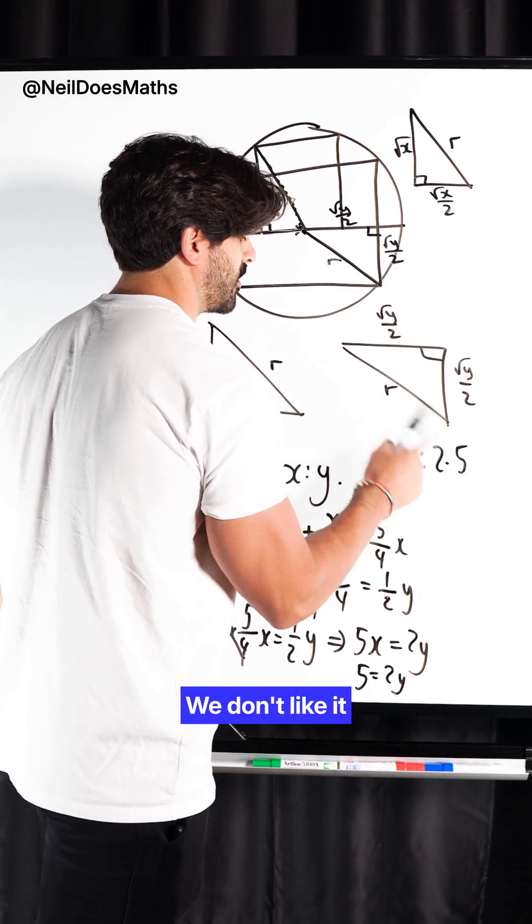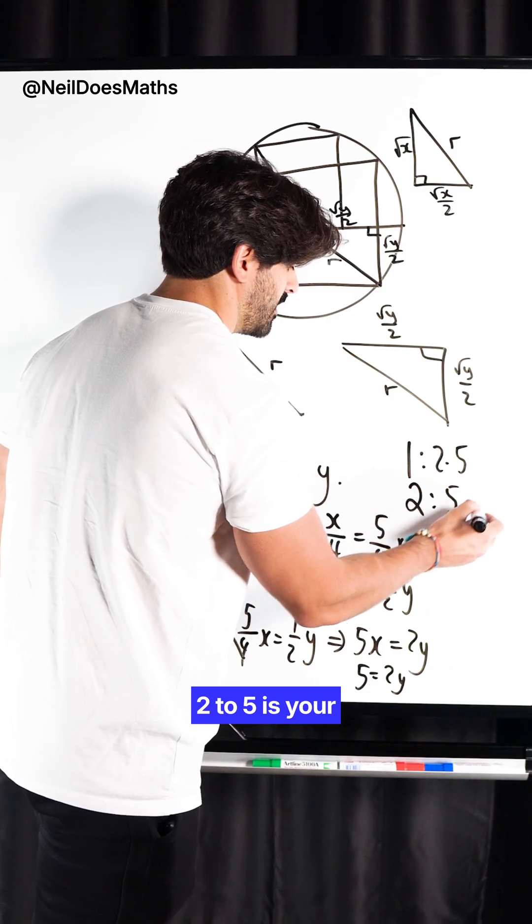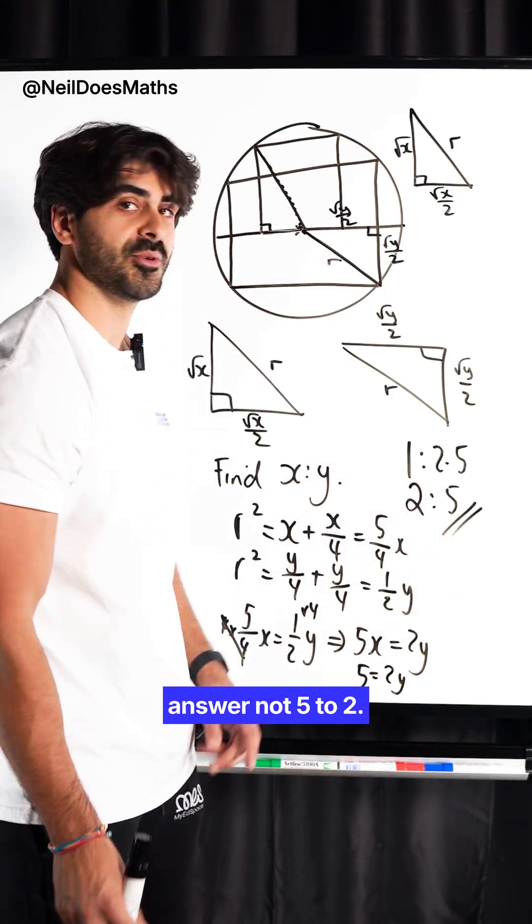So, the ratio is 1 to 2.5. We don't like it like that, so we double everything. 2 to 5 is your answer, not 5 to 2. Nice.